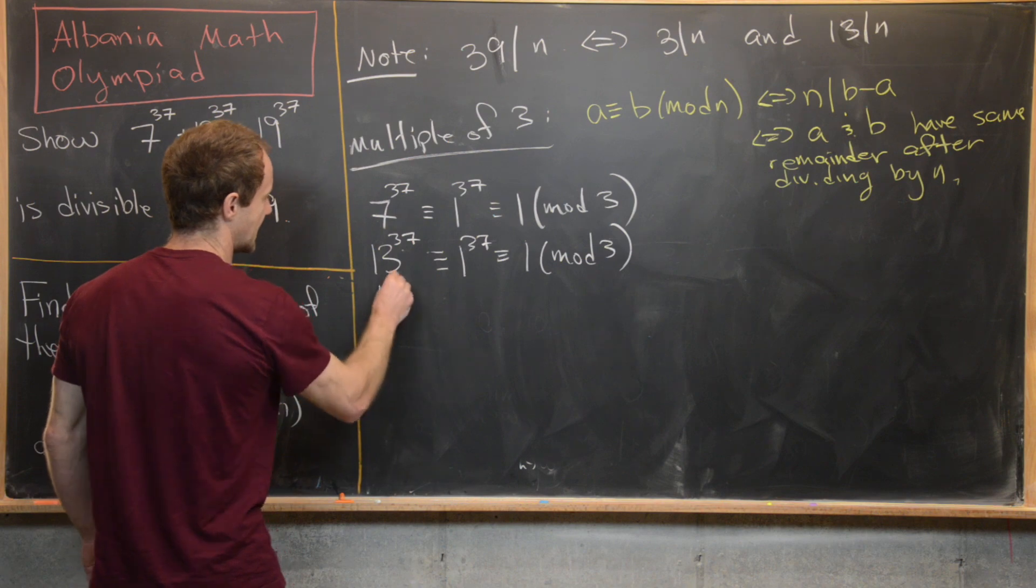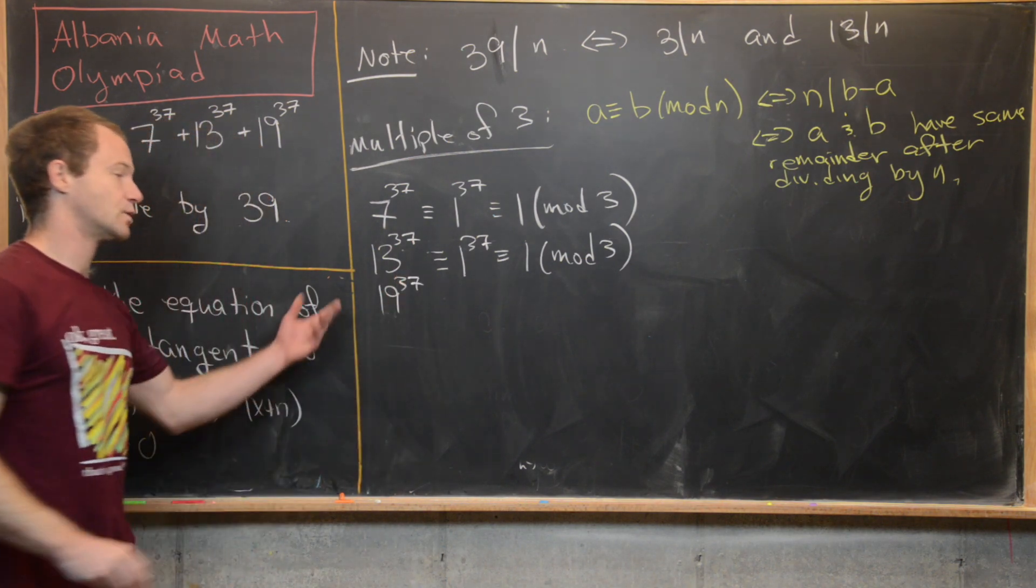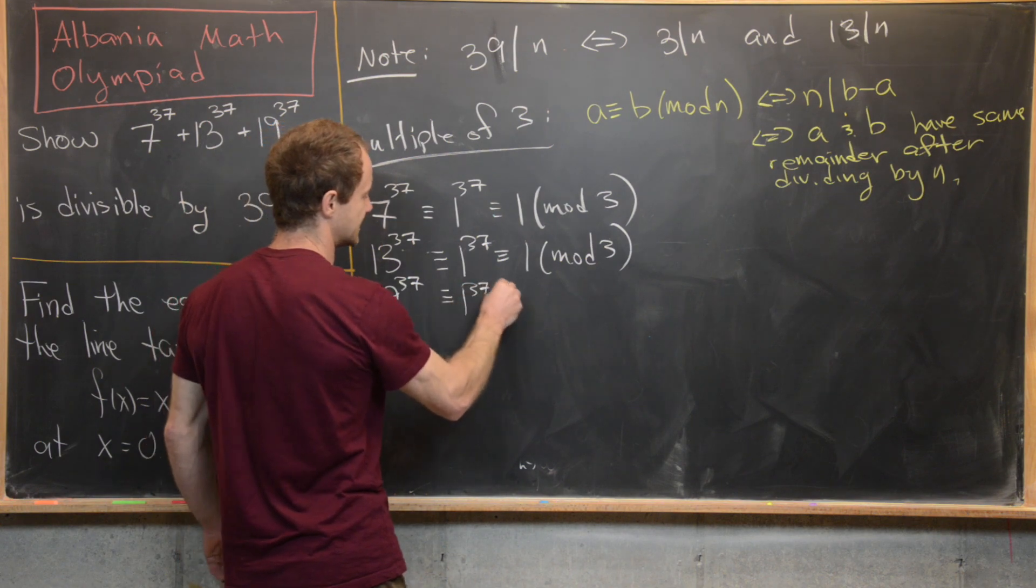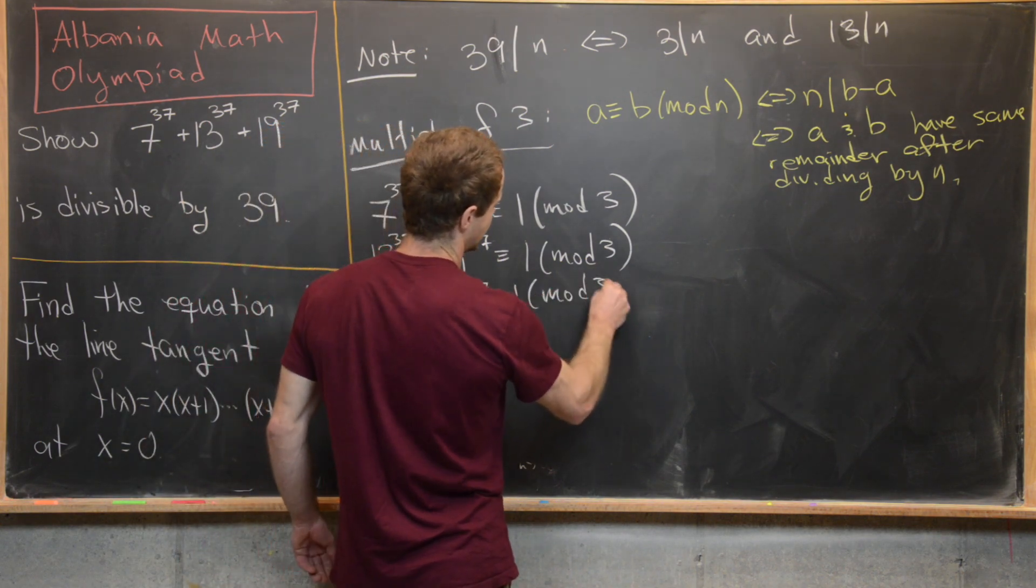And then similarly, 19^37, that's 1 more than 18, which is a multiple of 3. So we get this is 1^37, which is congruent to 1 mod 3.